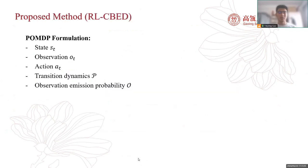We propose a novel policy-based method. First, we cast the active causal discovery problem as a POMDP, including how to design states, observations, actions, transition dynamics, and observation emission probability.